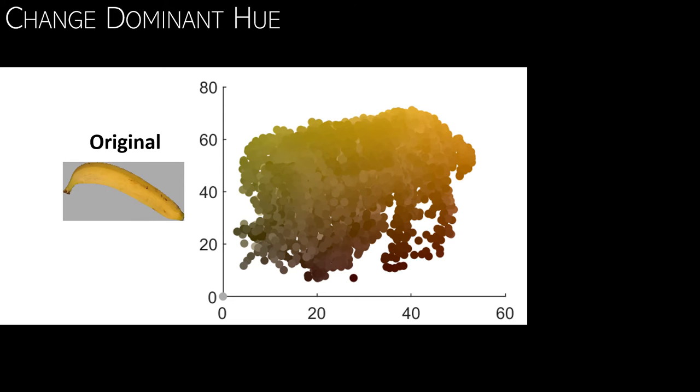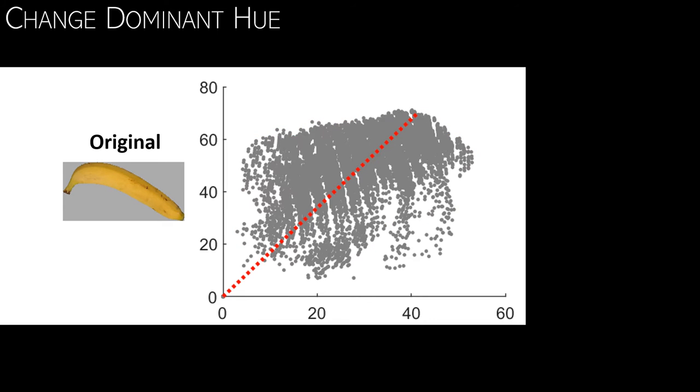In that comparison condition, we did not change the shape of the distribution, but we rotated it. Here you see the original distribution in gray. The red line indicates the dominant hue as a reference.